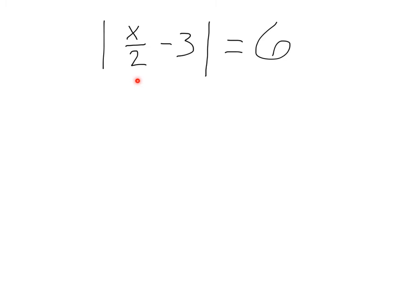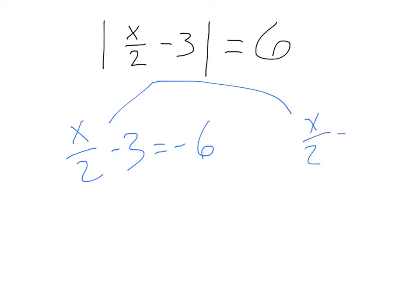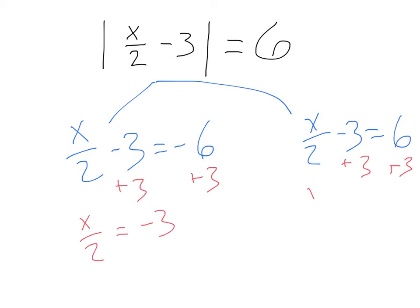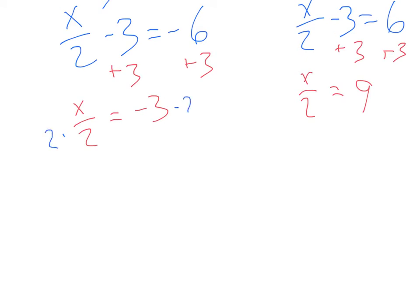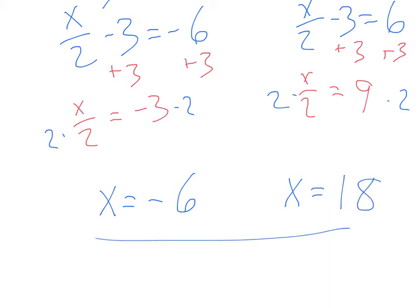Here we've got absolute value of x divided by two minus three equals six. We want whatever's inside the absolute value to equal six spaces from zero. So that's x over two minus three equals negative six, and x over two minus three equals positive six. Adding three to both sides gives us x over two equals negative three, and x over two equals nine. Multiplying by two gives us x equals negative six and x equals 18. There are both our answers.